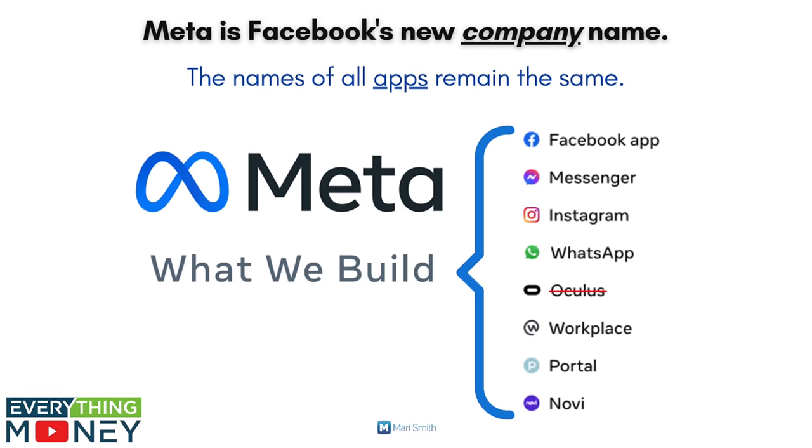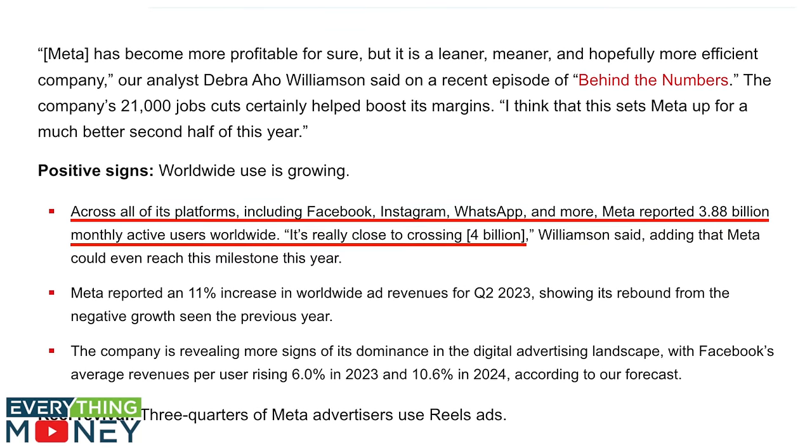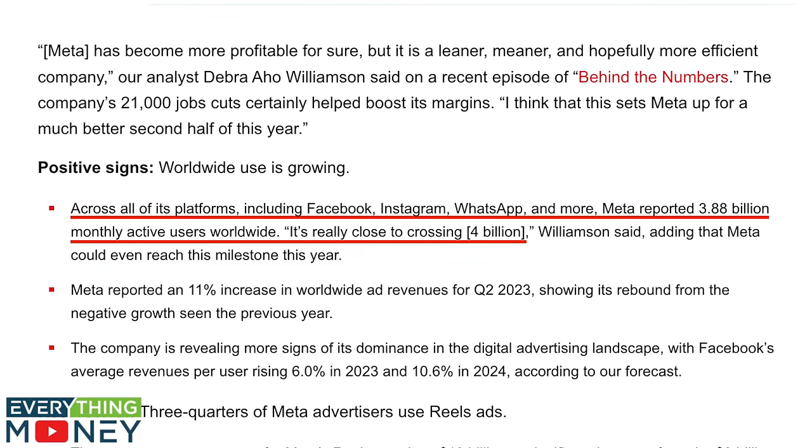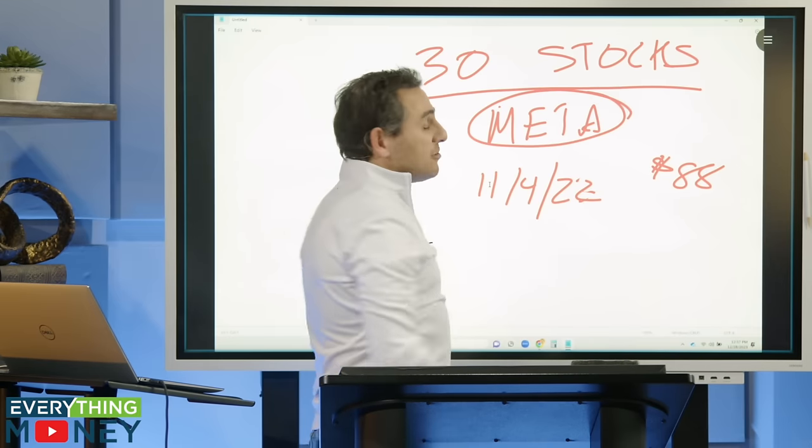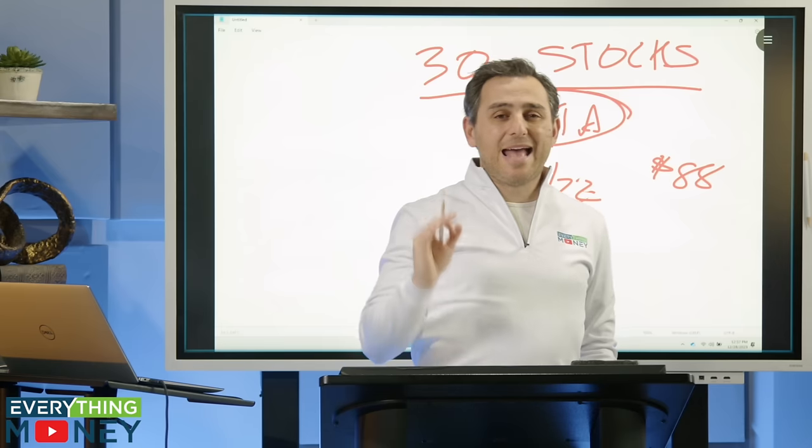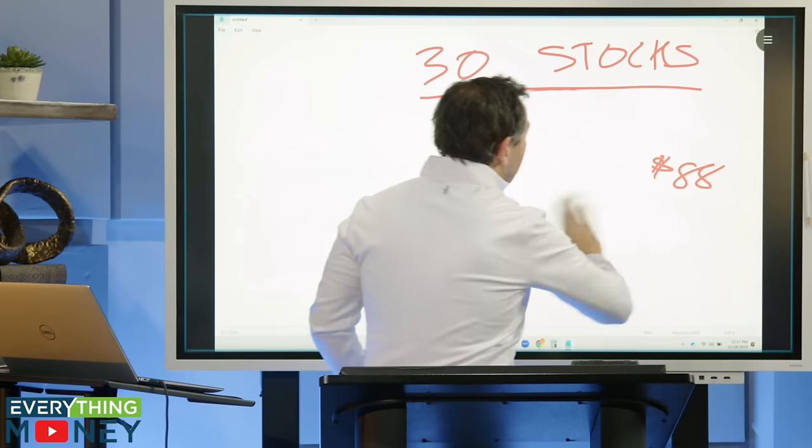This company controls Facebook, Instagram, WhatsApp. Three and a half to four billion of the world's eight billion people use Meta products every single day. Their cash flow has been hit because of the Metaverse, but they're still generating amazing cash flow and have not maximized their revenue per user. So I love that for Meta.